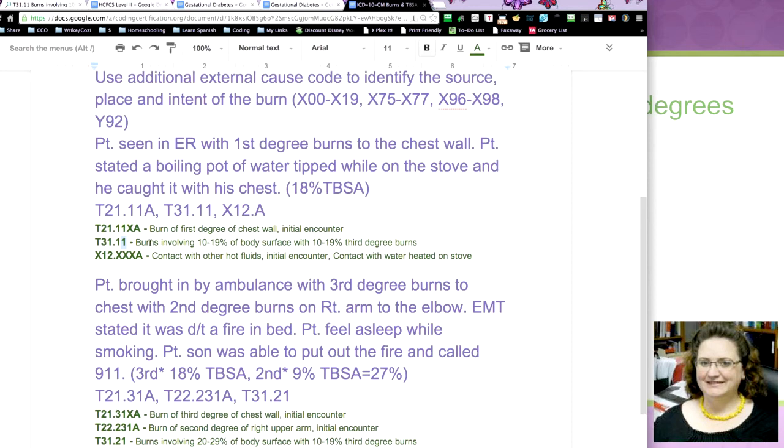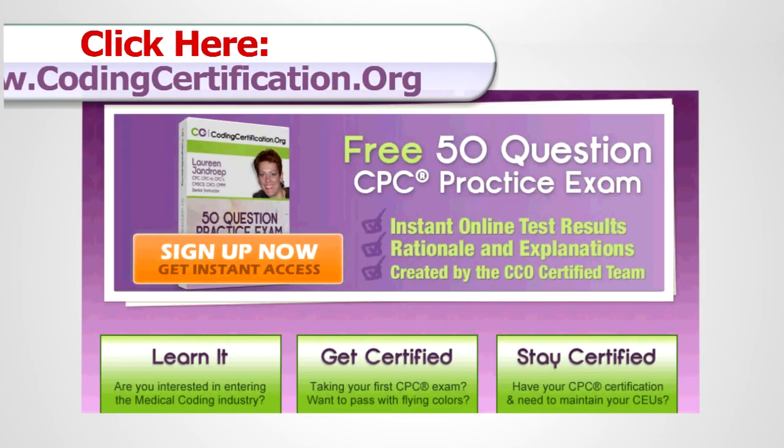And then the last digit is supposed to be that that is third degree or worse, you know, like a deep third or third with loss of body part. Yeah, if you go and you look at all the T31s, it mentions third degree in every single one of them. It says, you know, it's like 0 to 9% third degree burns. It's inclusive. If you go in and you look through T31 through T32.99, you'll see that every single one of those in green, it says with and then it gives you a TBSA in third degree.